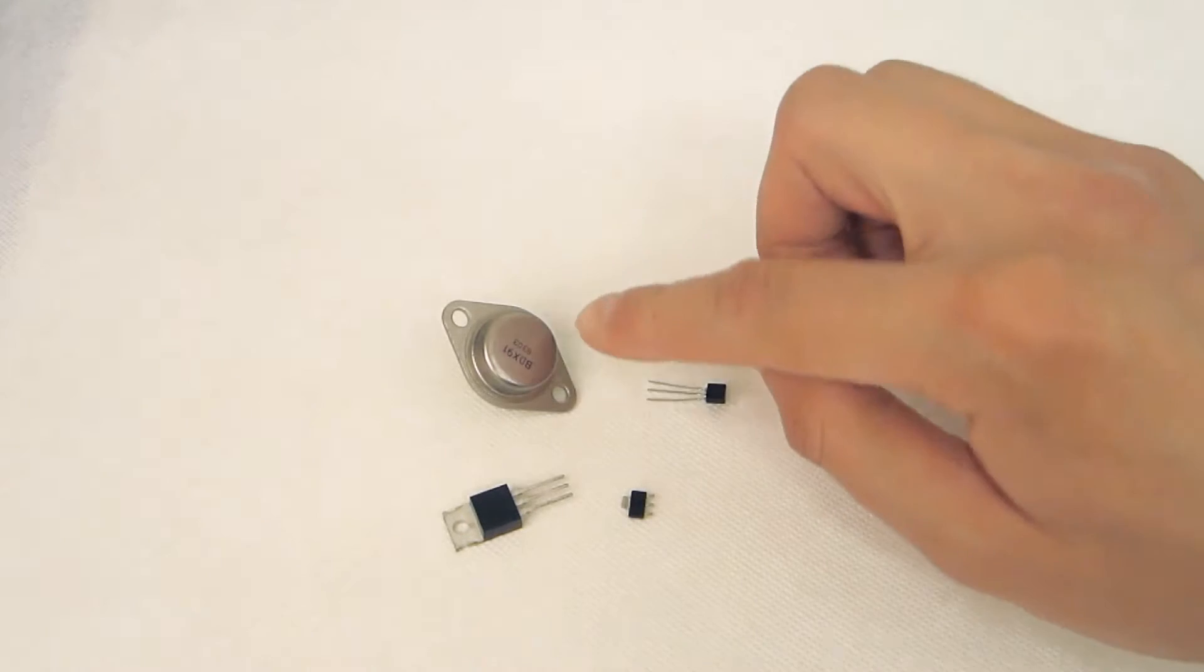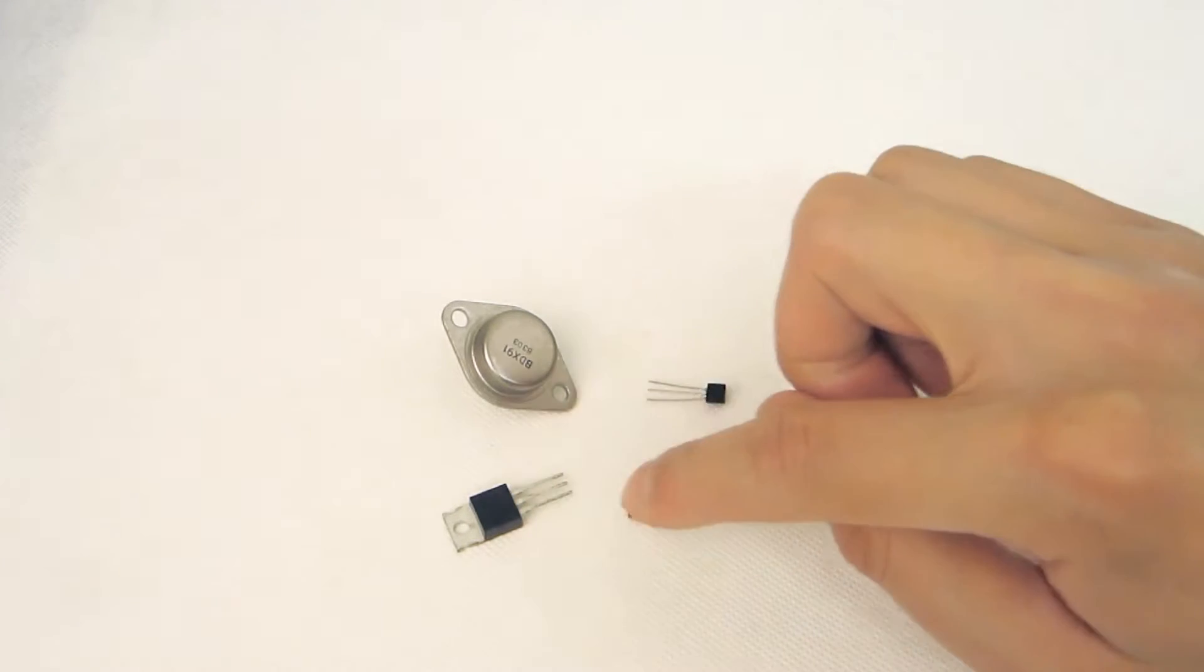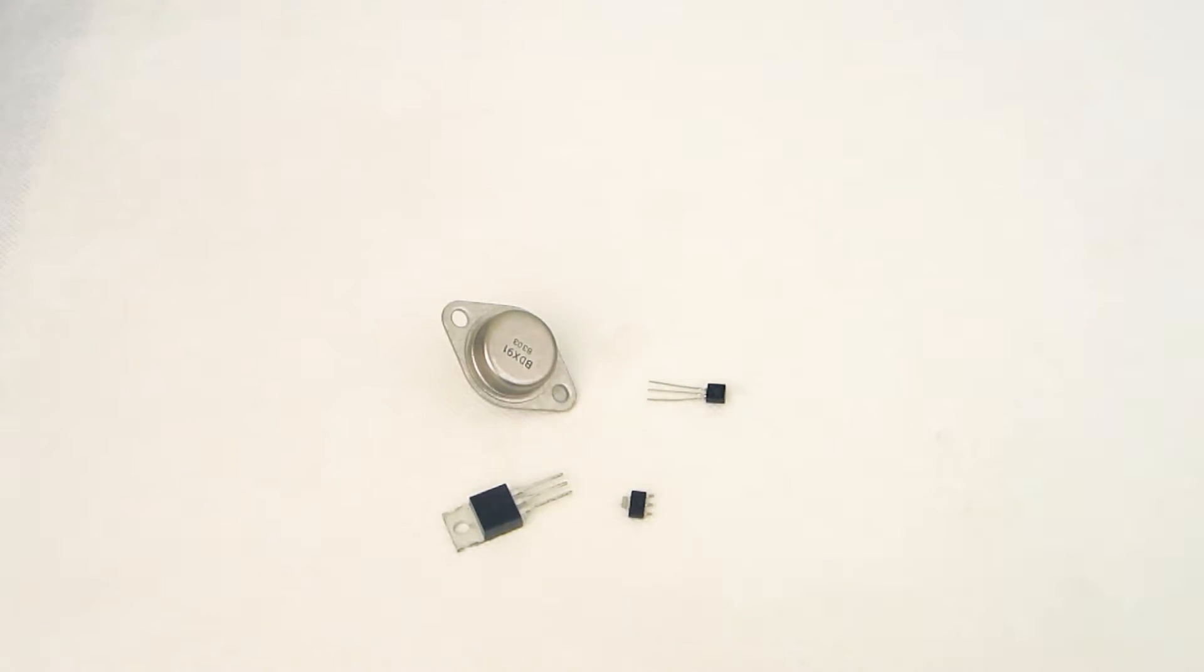If you look on the front of the transistor, you'll be able to see a number code. This is the transistor's part number, and if you Google this, you can find the transistor's data sheet. The data sheet, normally a PDF, will have details of how the transistor can be used.